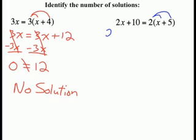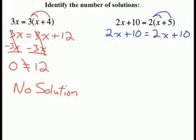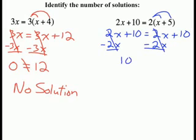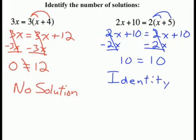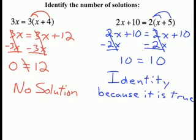For the next equation, we simplify the right side by distributing: 2 times x is 2x and 2 times 5 is 10. Moving all variables to the left, we subtract 2x from both sides and are left with 10 equals 10. Because the two numbers are equal to each other, this means that for all values of x the statement is true — and that is called an identity. So we have an infinite number of solutions.